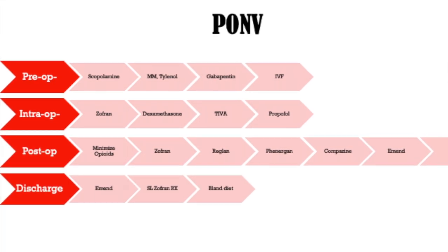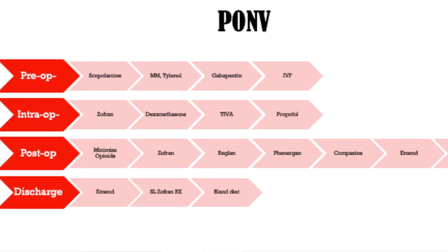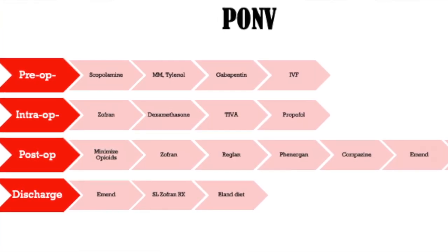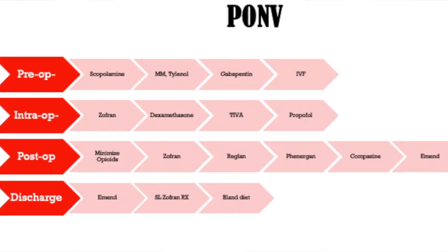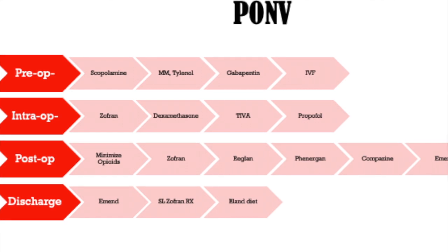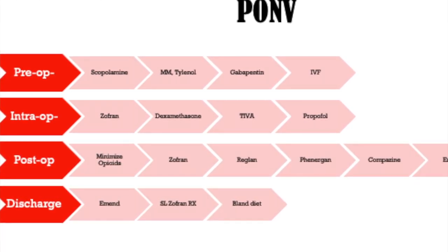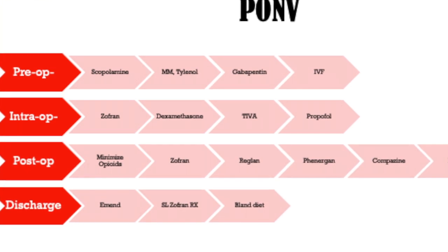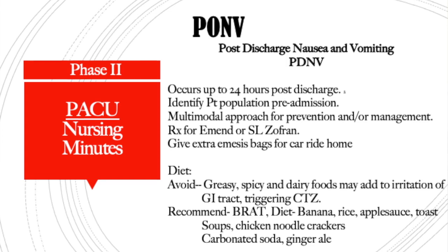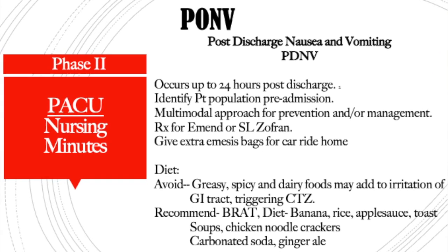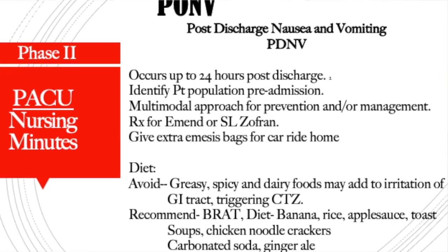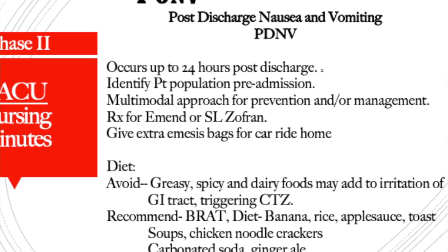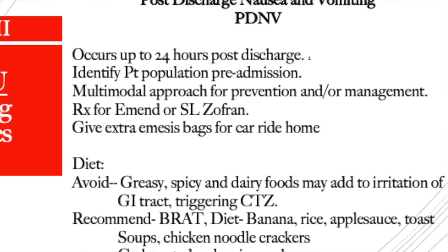Post-op interventions include minimizing opioids such as fentanyl and dilaudid, which trigger nausea, and following up with anesthesia orders for Phenergan, Reglan, Compazine, Emend, or continuing IV fluids. Post-discharge nausea and vomiting, occurring within 24 hours after discharge, can be identified pre-operatively during the pre-admission assessment. Use a multimodal approach with these patients, and consider prescriptions for Emend and sublingual Zofran.